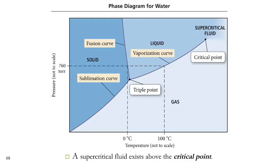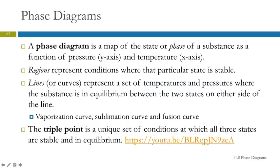This point here, we have all three lines coming together. This is called the triple point. And at this precise pressure and temperature, the gas, the liquid, and the solid are all in equilibrium with each other. Is that weird? It's really weird. You can watch a YouTube video.